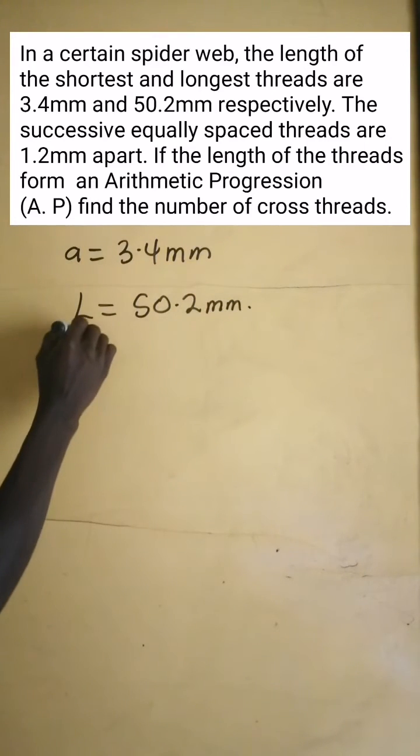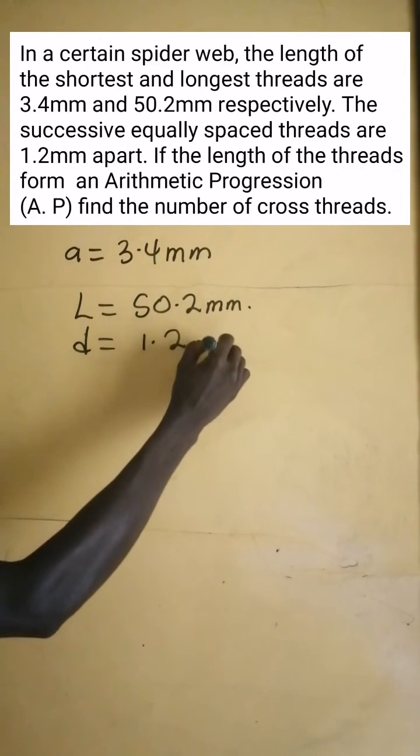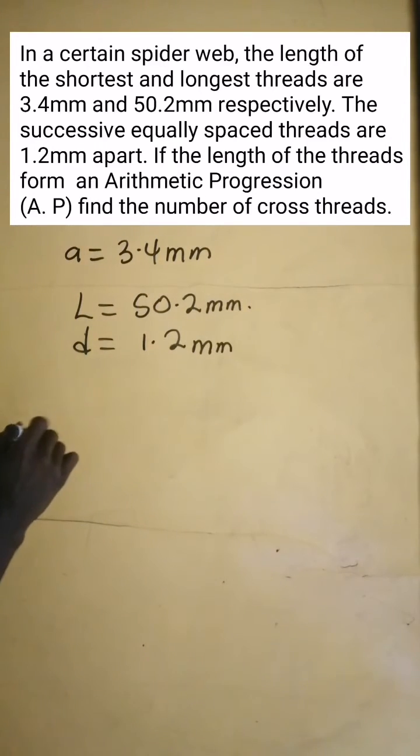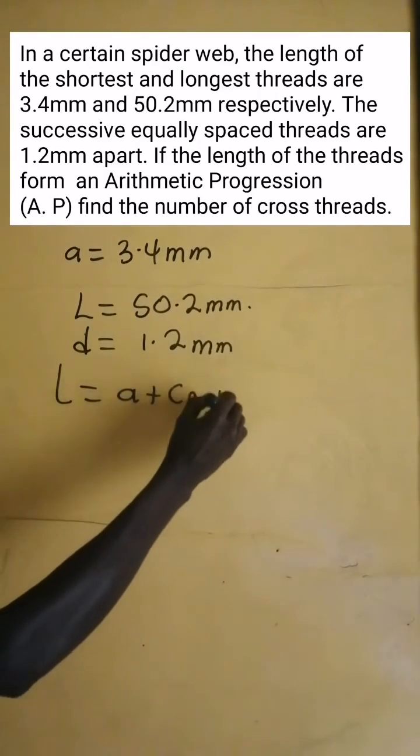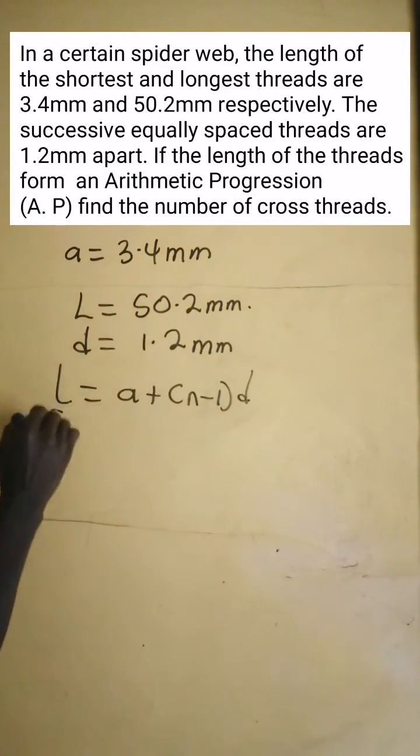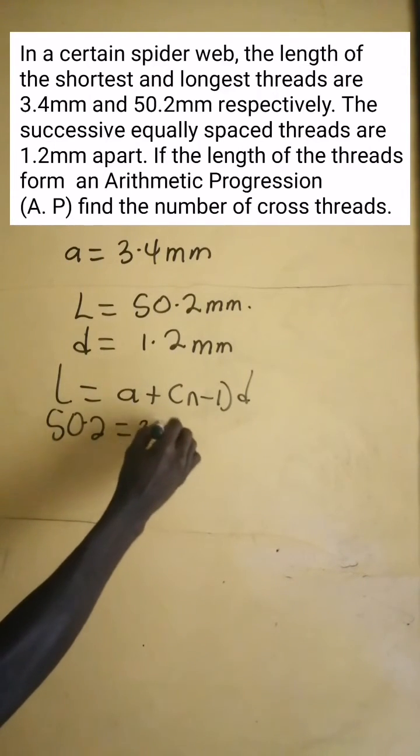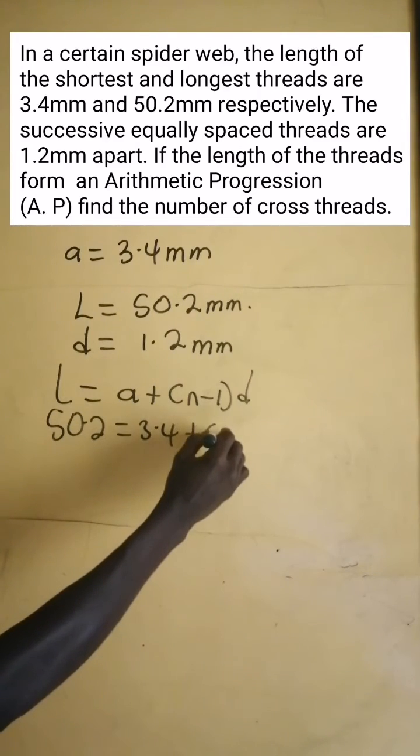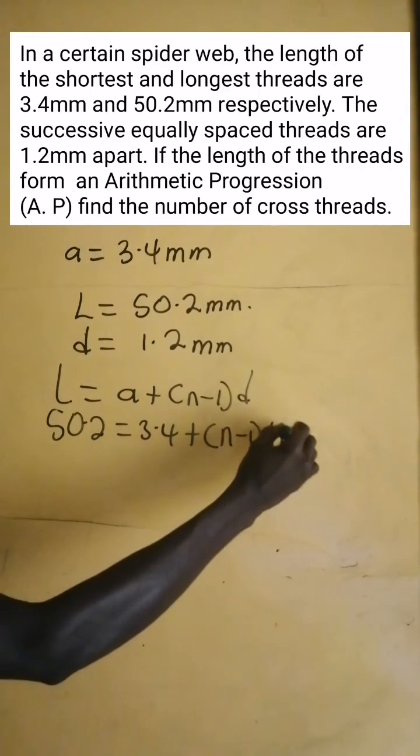The successive equally spaced threads represent the common difference, that is 1.2 mm. We know that for an arithmetic sequence, the last term L equals a plus n minus 1 times d. So we have 50.2 equals 3.4 plus n minus 1 times 1.2.